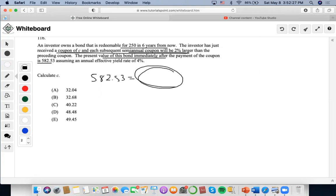Then afterwards it says that it's redeemable for $250 in six years from now. So that is the second part of the bond pricing formula when it's $250 V to the, well, they're saying that there's a semi-annual situation here. So we're going to have to do V to the 12, right? Six times two.